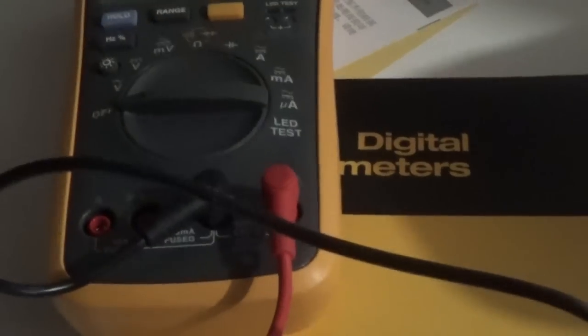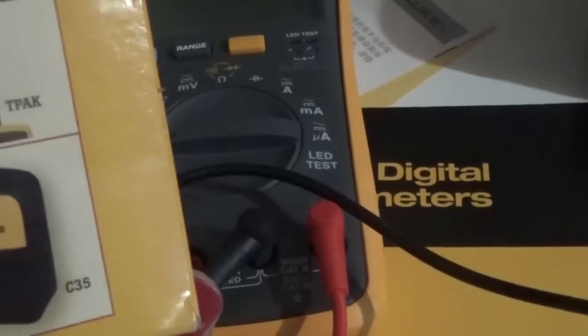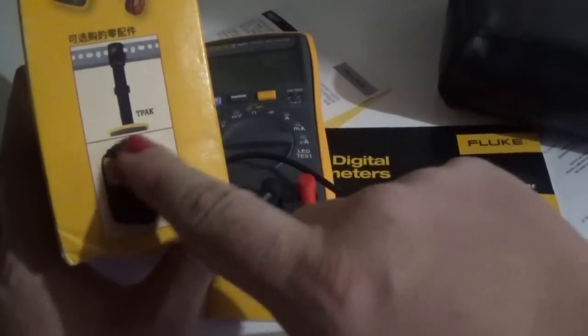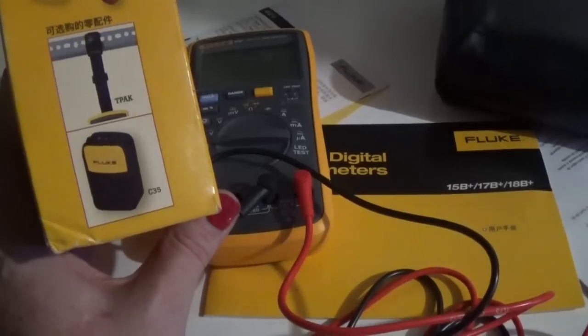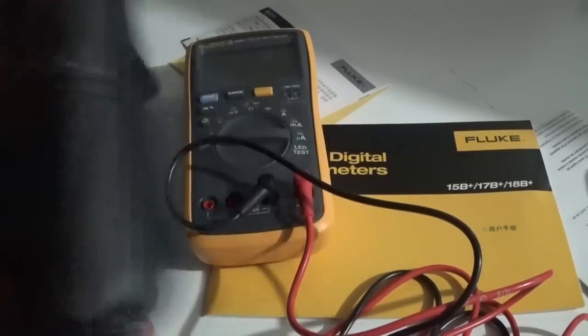That's all very well, and not only that, it came with what purports to be, if we have a look on the box here, the genuine Fluke padded bag. I'm very suspicious about that. It was packaged separately with this bag and the bag came in a makeup company plastic wrap, so I'm thinking this is a look-alike.